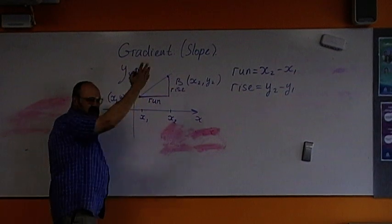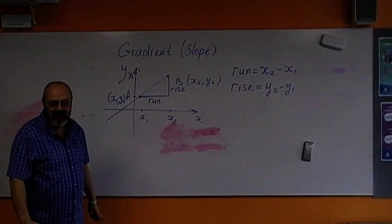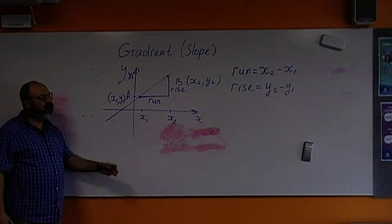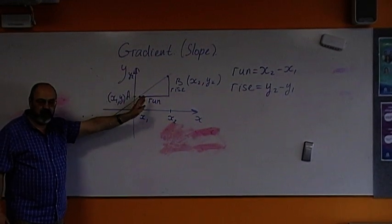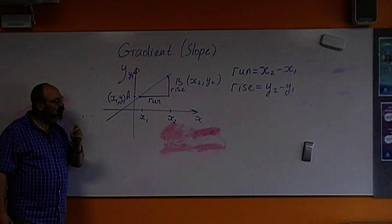It will be infinitely, if it's going forever, it will be infinite number of points. But, between these two points, only x2 and x1. Make sense? Yes. Now, gradient...